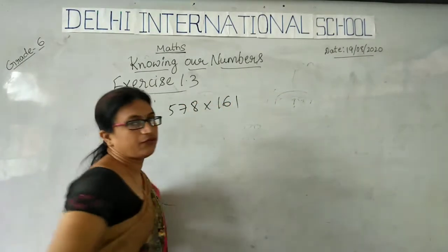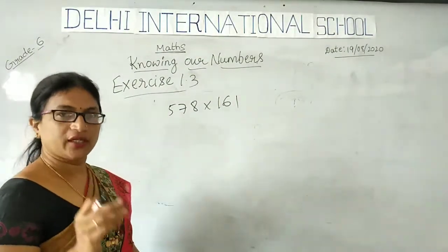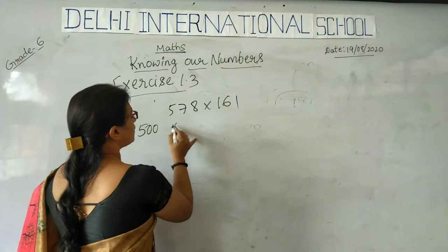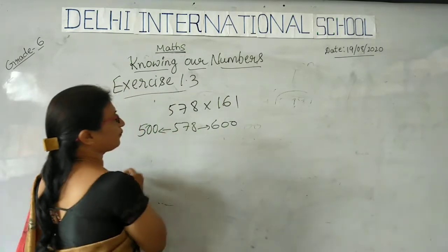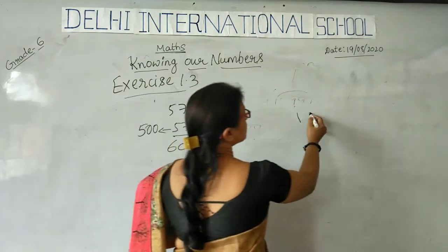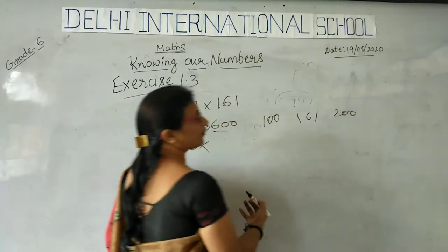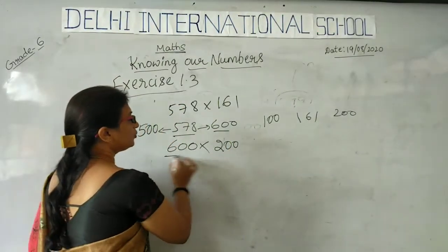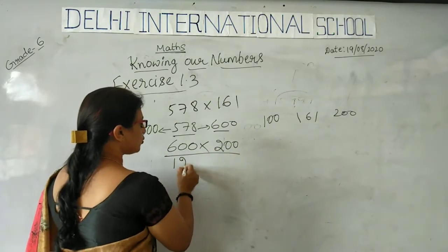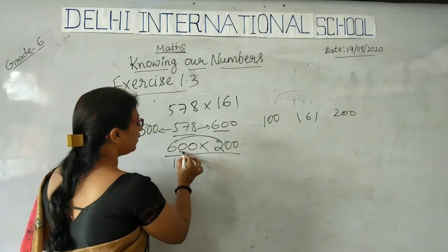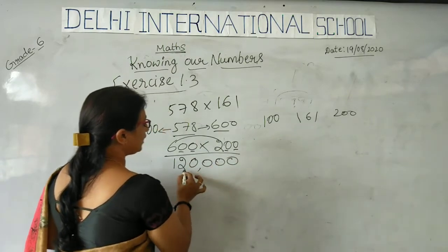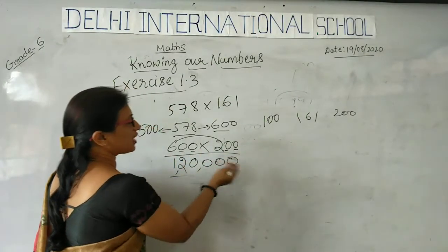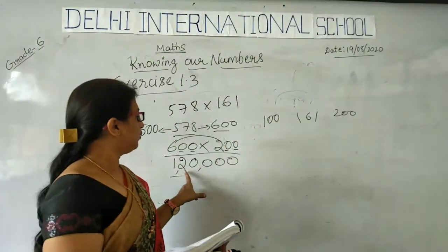So 578 into 161. By using the general rule, we have to bring it to the nearest hundred. 578 is nearest to 600. And 161 — is it nearest to 100 or 200? It is definitely nearer to 200 because it is above 150. So I multiply 600 by 200. Simple multiplication: 6 times 2 is 12, and then count the zeros — 1, 2, 3, 4 — so the answer is 1,20,000.